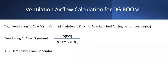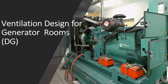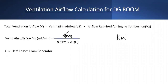So if we know Q and the temperature difference, we can calculate how much ventilation airflow is required in the DG room. The Q here is the heat losses from the generator — it is not the electrical kilowatt rating of the generator. Q is the heat dissipation: the heat radiated from the radiator and from the engine into the room space. That is the heat dissipation we need to remove.